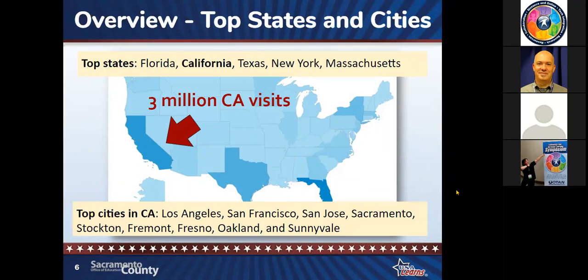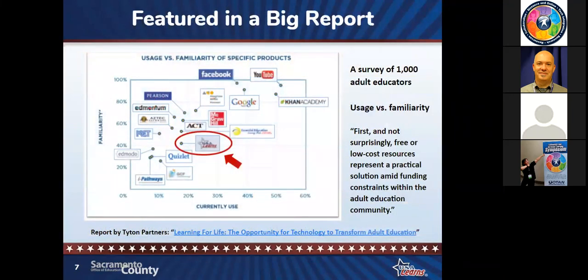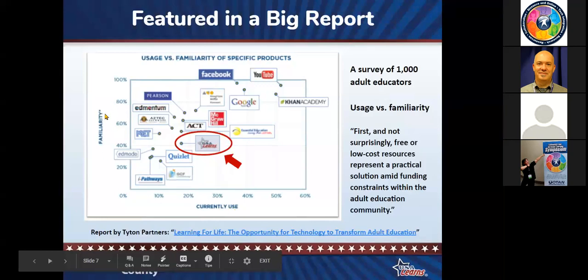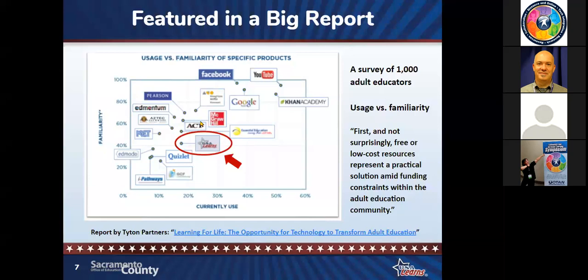You just might see your city there, and if you don't, I bet people from your area are using it anyway. USA Learns was featured in a big report done by a group called Titan Partners called 'Learning for Life: The Opportunity for Technology to Transform Adult Education.' USA Learns is located right in the middle of the results showing usage versus familiarity of specific products — right there next to McGraw Hill and Quizlet and other big names. During the study, they surveyed a thousand adult educators, and one thing people really liked was the low cost — actually free — aspect of the site.